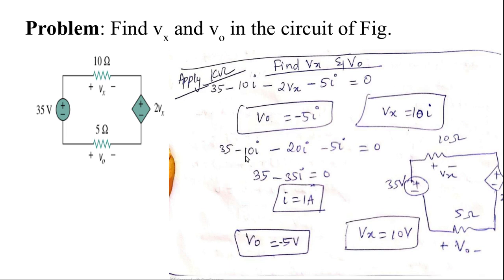So 35 equals 10 plus 20 plus 5, which equals 35. Therefore i equals 1 A. Now, what is the value of Vx and V0? Vx equals 10i, so 10 into 1 equals 10 V. V0 equals minus 5i, so minus 5 into 1 equals minus 5 V.